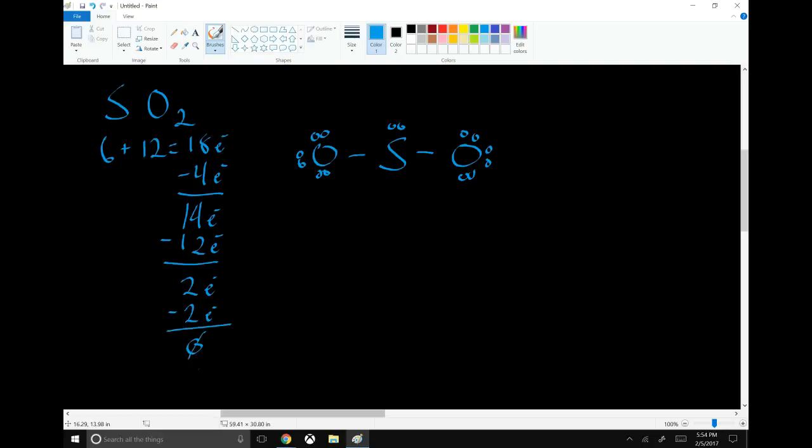Sulfur is not yet happy. We need to convert a pair of electrons into a double bond on sulfur. So now sulfur is happy. And of course, thanks to resonance, it's actually like that.